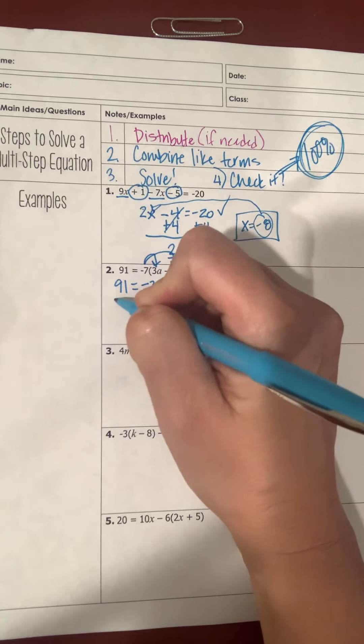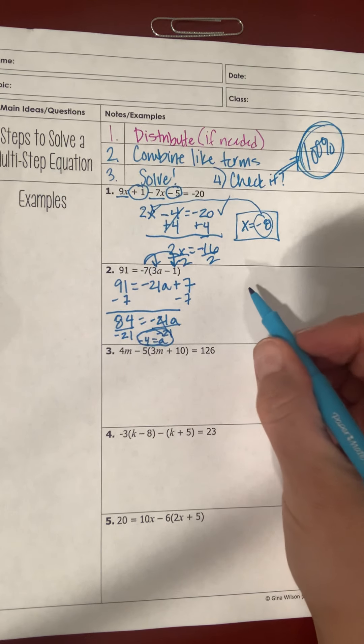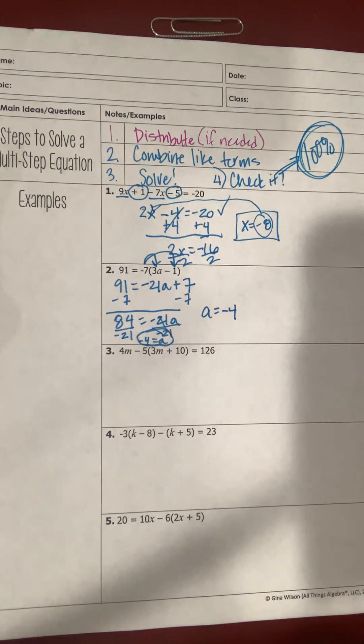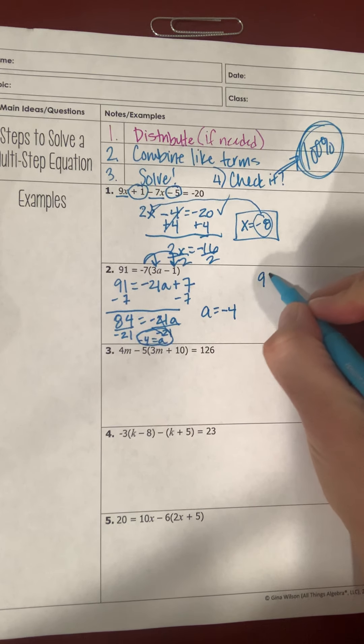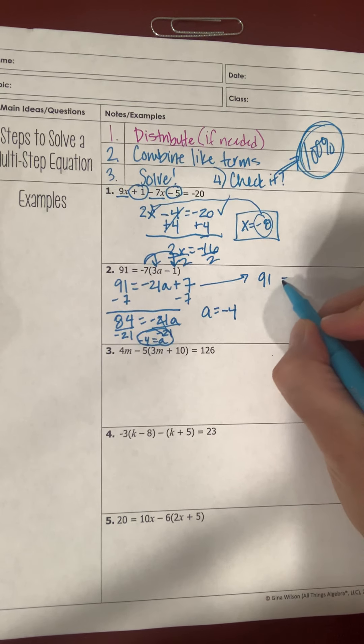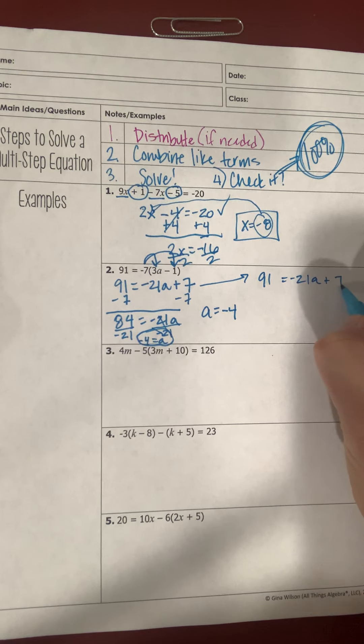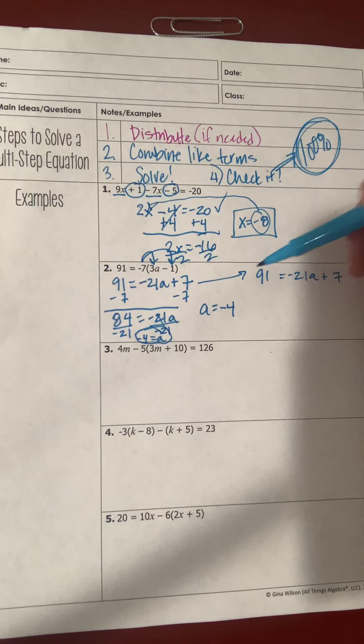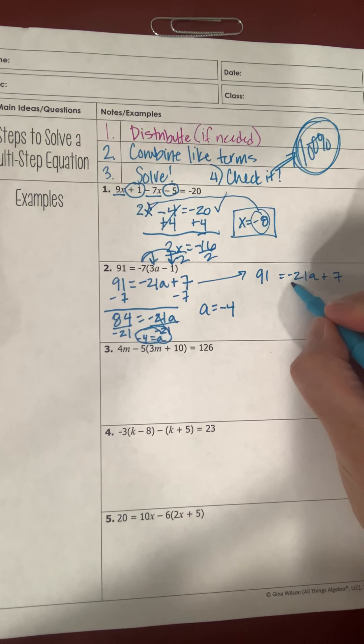To get a by itself, I divide both sides by negative 21. 84 divided by negative 21 is negative 4, so negative 4 equals a. I apply the symmetric property to rewrite it as a equals negative 4.